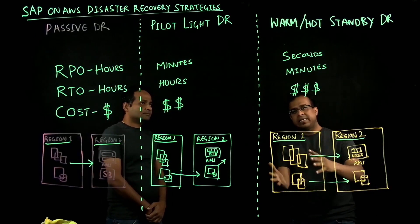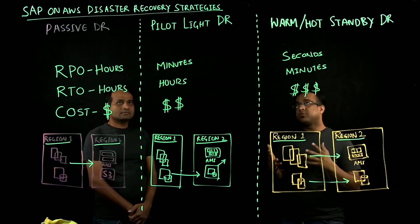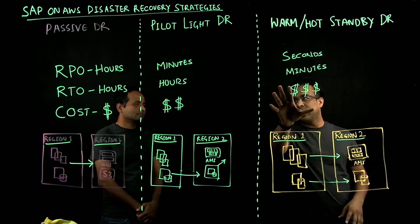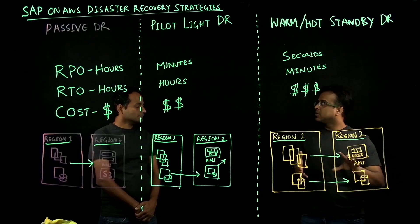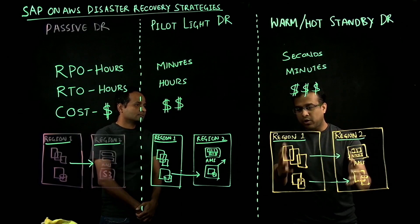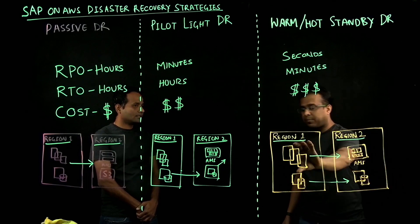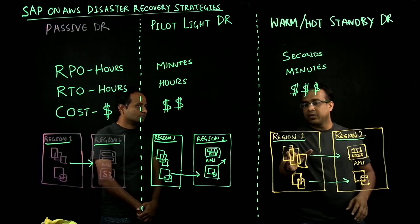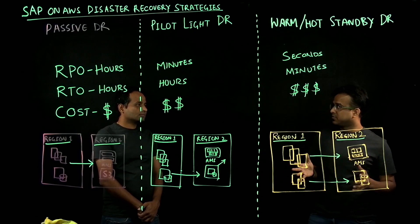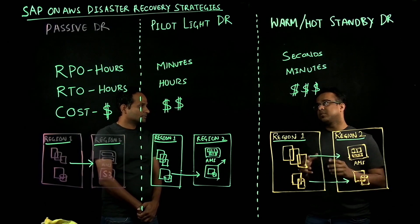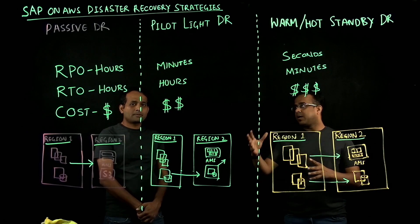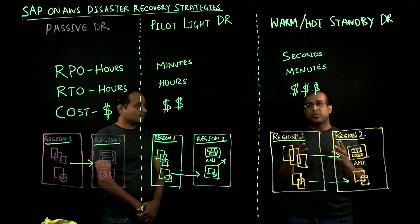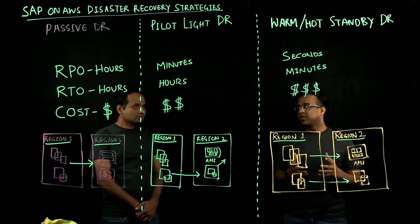This really helps. So, if a customer needs RPO in seconds or RTO in minutes and they are okay with a higher cost, they can use warm or hot standby. There is still a lot of flexibility depending on their need and application layer — they can save cost by running fewer app servers, or go hot standby with the same number of app servers. This is a fine equilibrium of RPO, RTO, and cost, giving customers many options and flexibility for running SAP on AWS disaster recovery patterns.